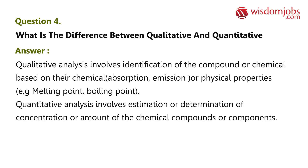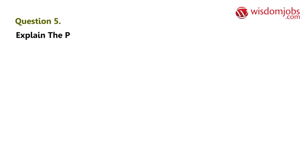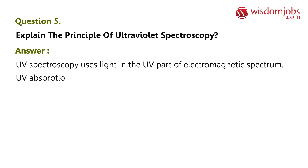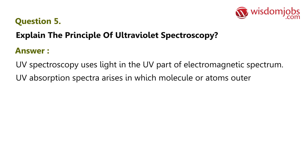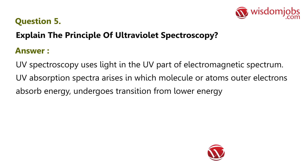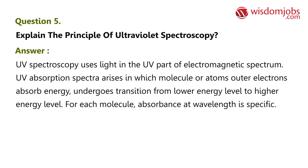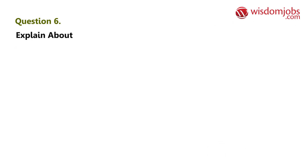Question 5: Explain the principle of ultraviolet spectroscopy. Answer: UV spectroscopy uses light in the UV part of the electromagnetic spectrum. Absorption spectra arise when molecules or atoms' outer electrons absorb energy and undergo transition from a lower energy level to a higher energy level. For each molecule, absorbance at a wavelength is specific.